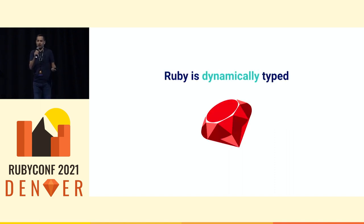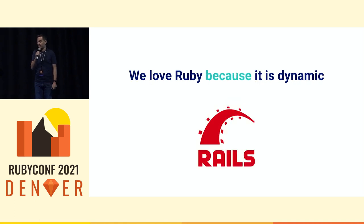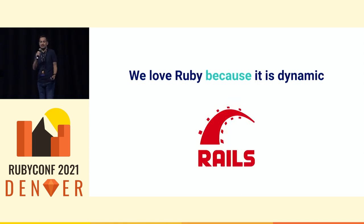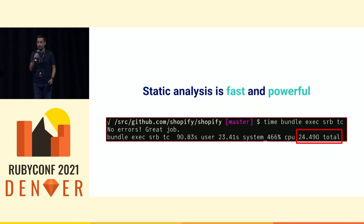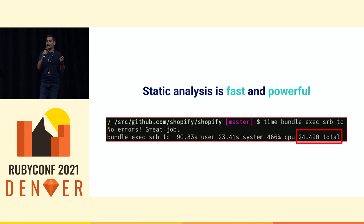Ruby, as we all know, is a dynamically typed language. And we love Ruby because it's dynamic, because it gives us things like Rails, which build on the full dynamic nature of the language. At the same time, static analysis is a fast and powerful tool.